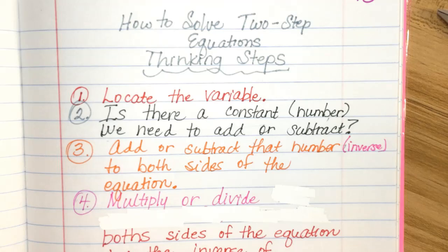And actually, kind of a better way to say this might be, is there a constant that's being added or subtracted in the problem? Because then you're going to do the inverse, right? You're going to add or subtract the inverse to both sides of the equation.